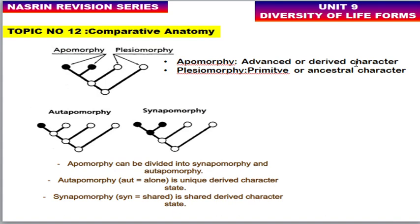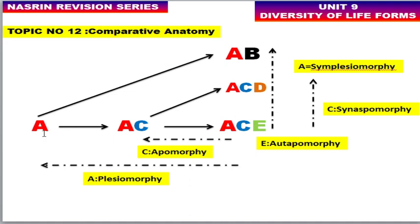Examples of homology: wings of birds, arms of primates, forelimbs of four-legged vertebrates like dogs and crocodiles all derive from the same ancestral structure — the tetrapod limb structure. Apomorphy means an advanced or derived character. Plesiomorphy means a primitive and ancestral character with no change, such as eating with hands or walking with legs. Apomorphy is classified into two types: autapomorphy and synapomorphy. Autapomorphy is a unique derived character state; synapomorphy is a shared derived character state.